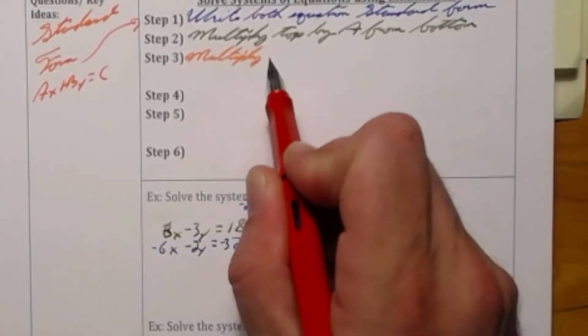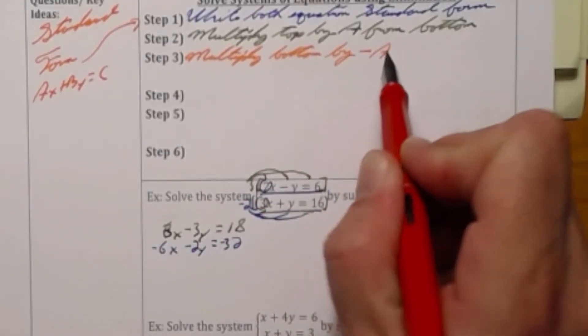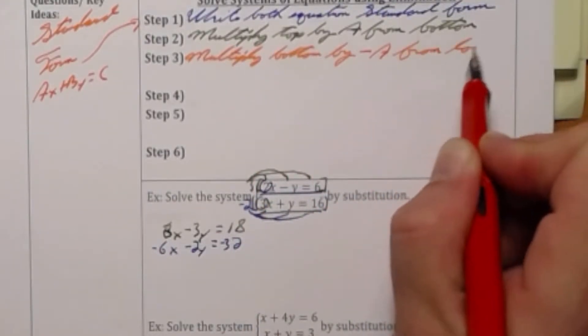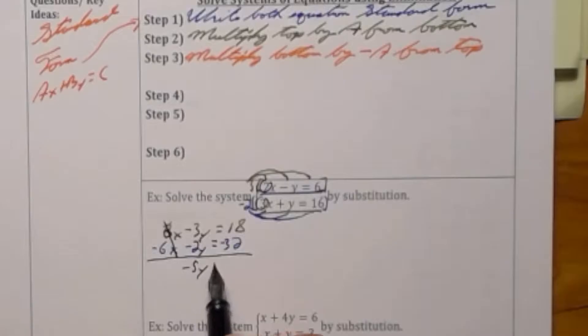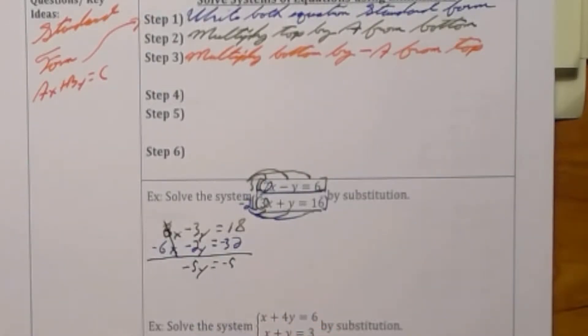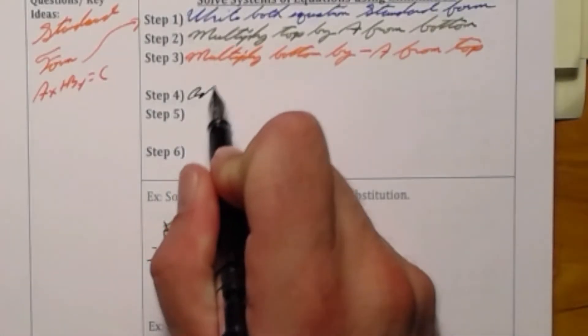Once that's done I'm going to add both equations together. And when I do this the same way every time my x's will eliminate leaving me negative 5y is equal to negative 14. I divide both sides by 5 and get y is equal to 14 over 5.